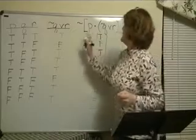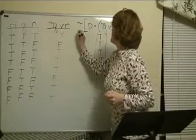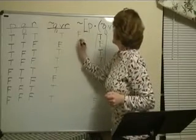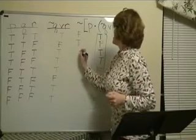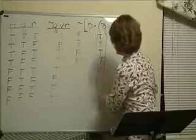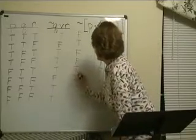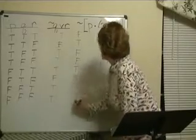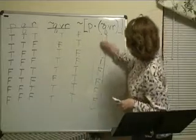Now we're going to negate it. Just the opposite of what we have. True, negated is false. False to true. True to false. True to false. False, false, false, false. True, true, true, true. Okay.